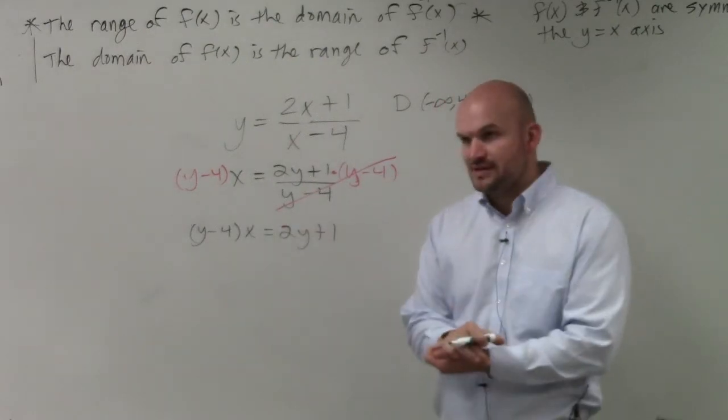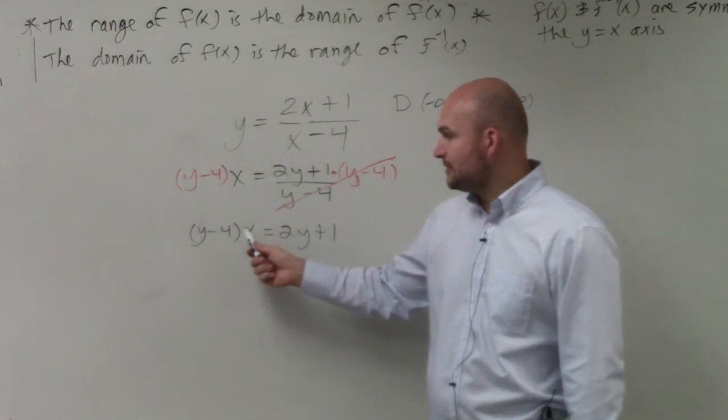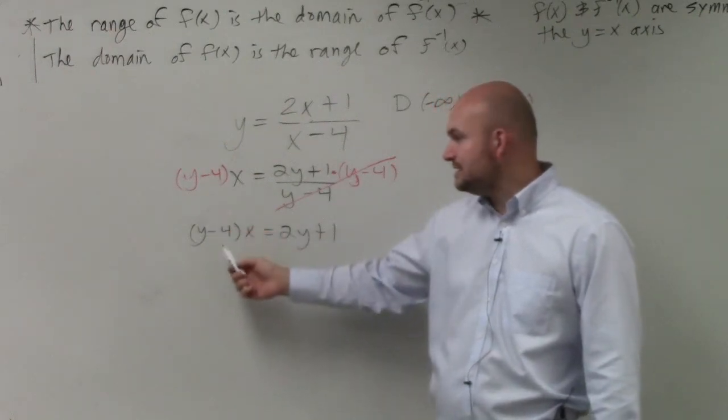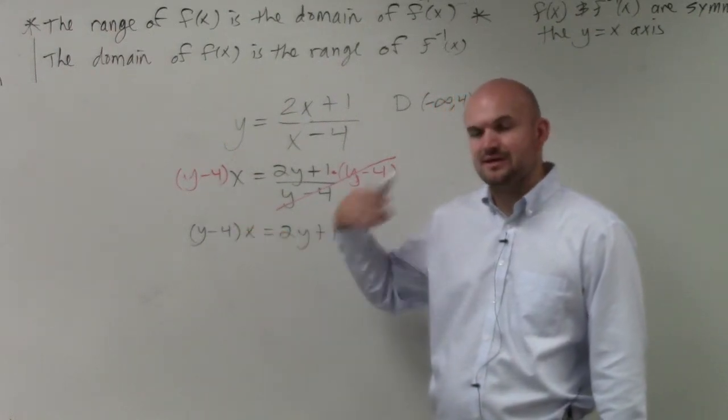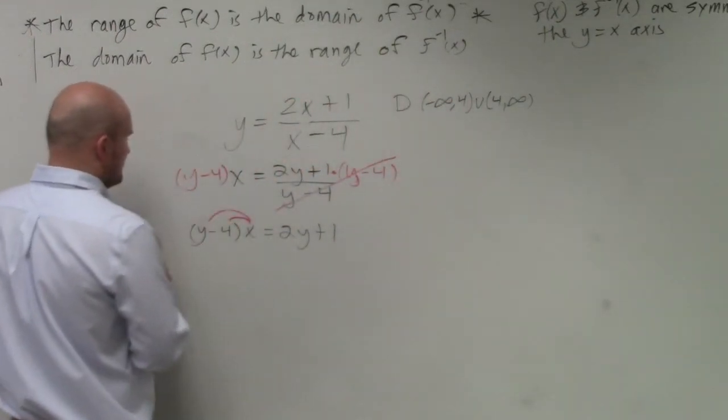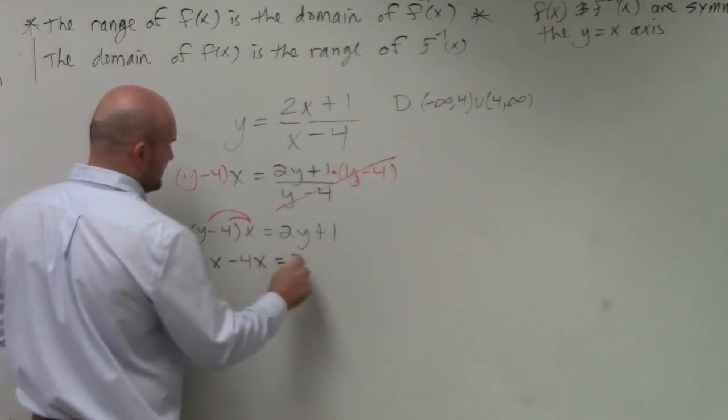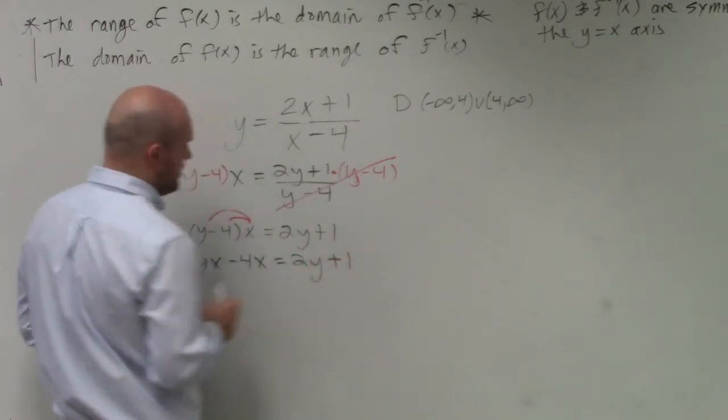I have a problem here, though. This is being multiplied by x. So the first thing I'm going to want to do is simplify this to get rid of these parentheses. So therefore, I now have yx minus 4x equals 2y plus 1.